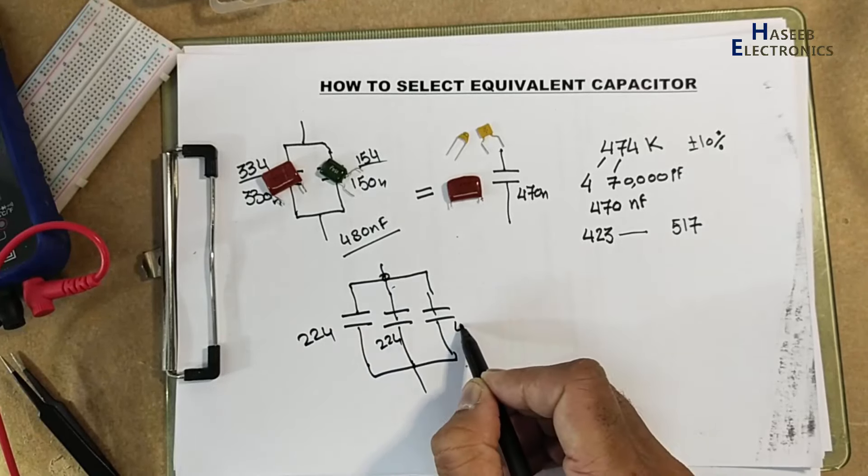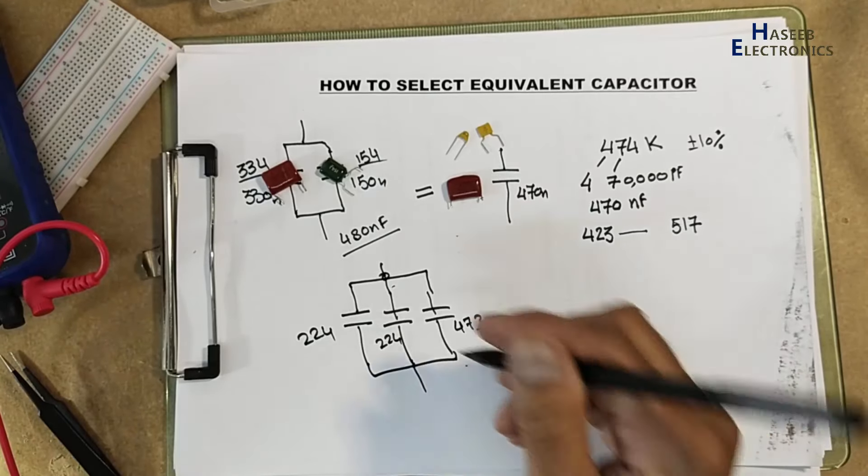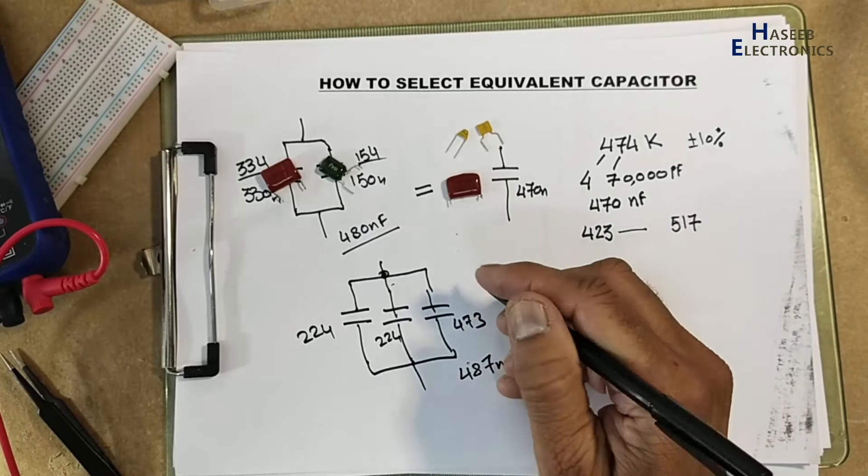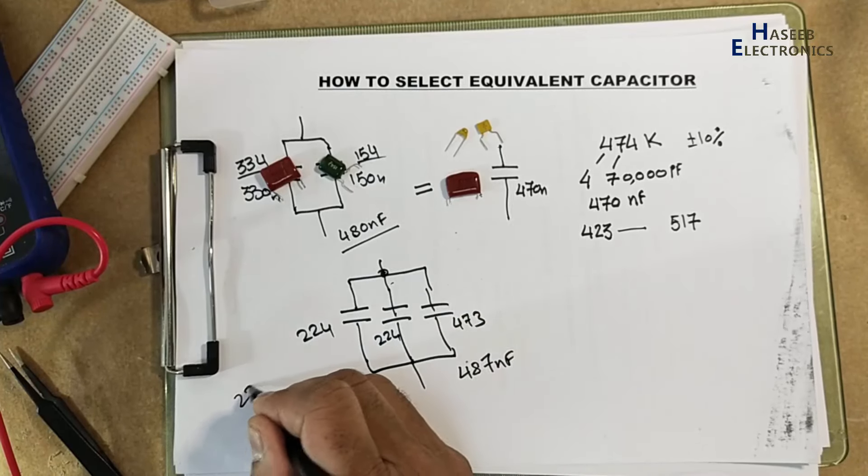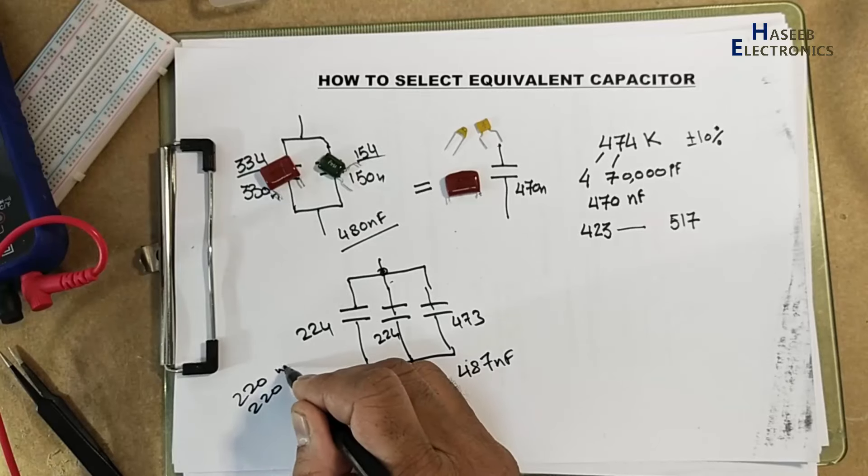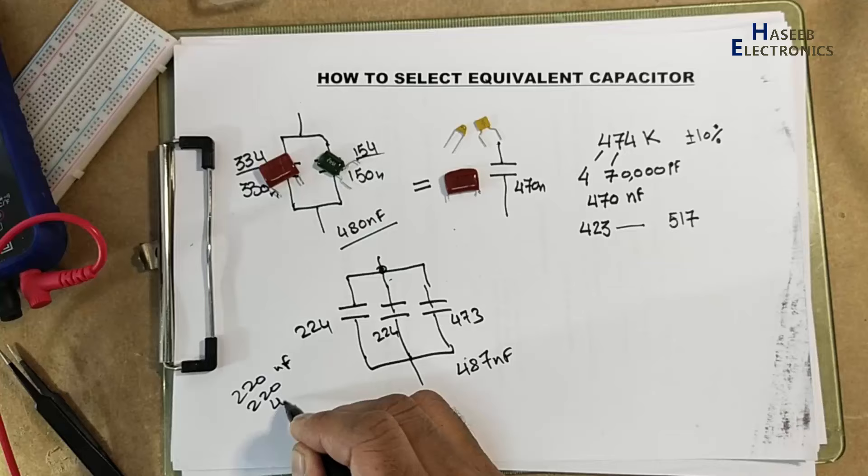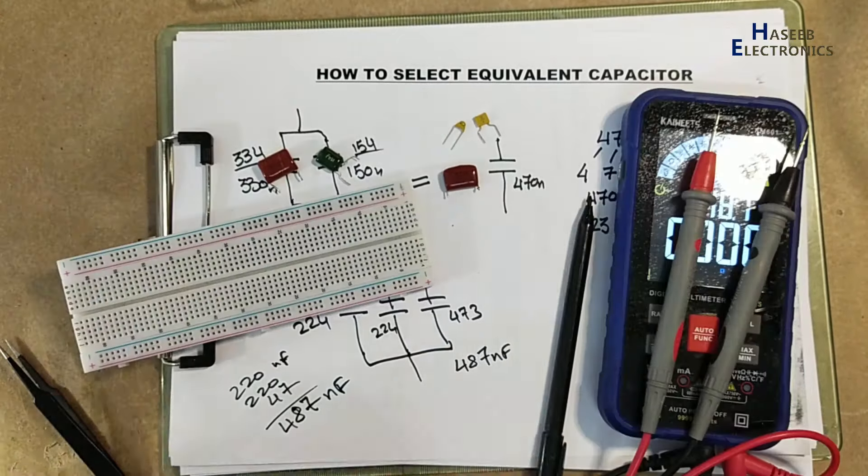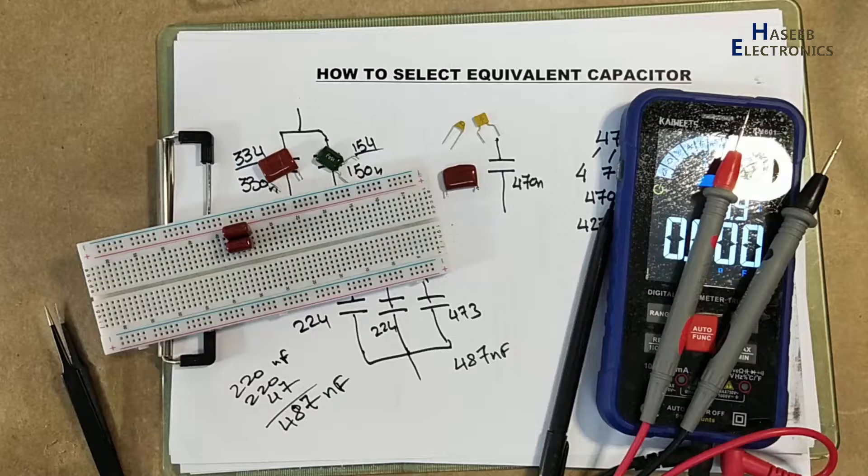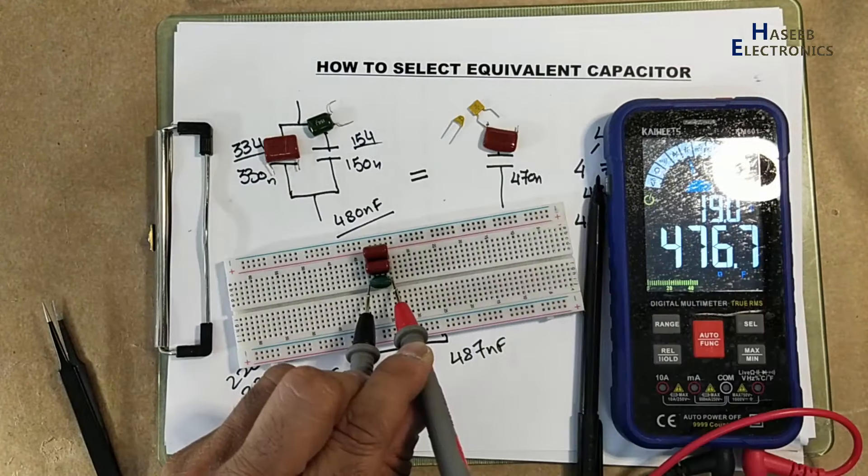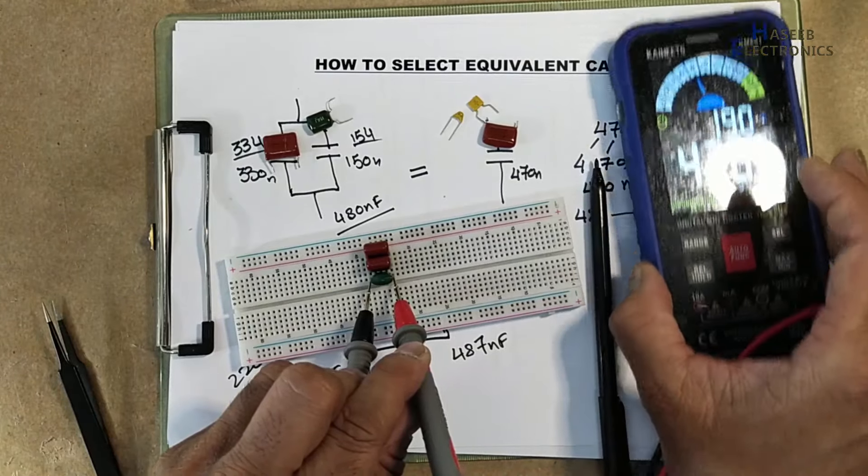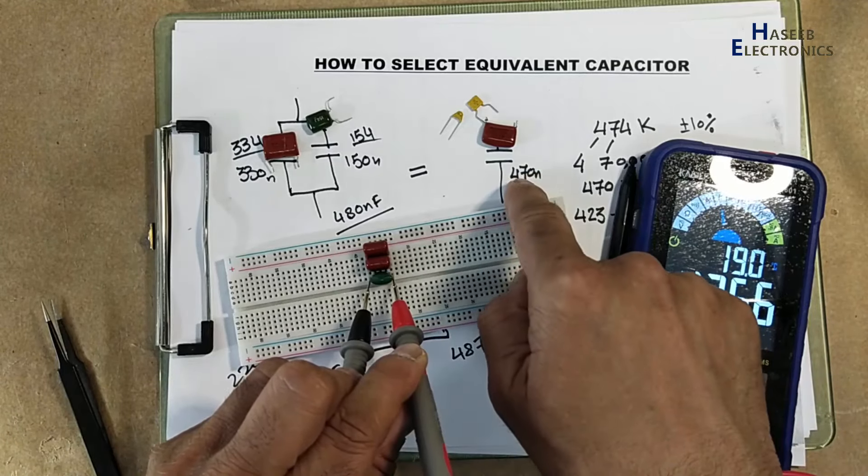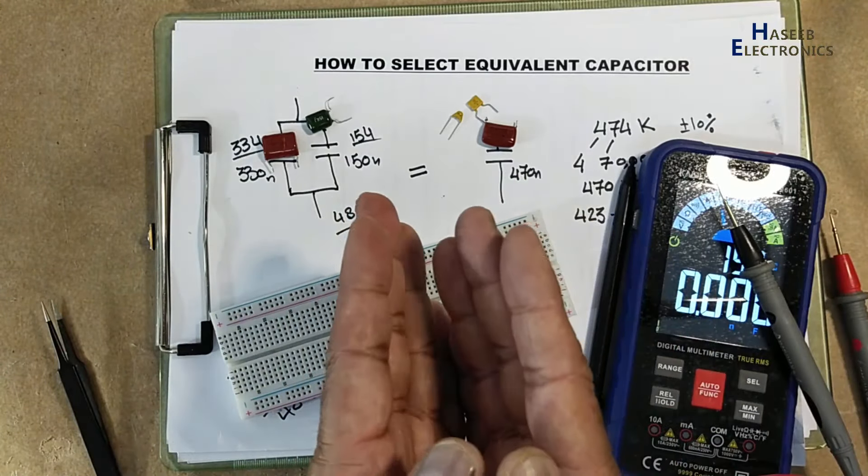224 code, 224 code, 473 code, it will be 487 nanofarad. In parallel, we get the equivalent value, that will be 476 nanofarad.